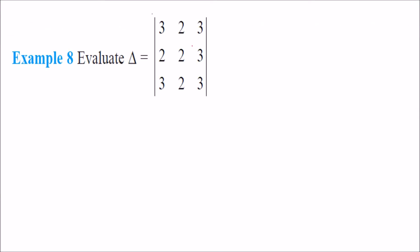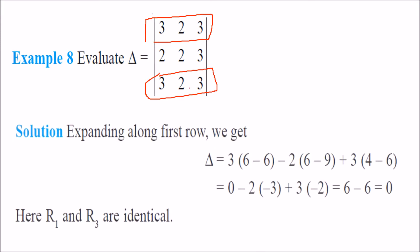We have to evaluate this determinant. As we see here, the first row and the third row are exactly the same. When we expand it using any row, you will get 0 only, because R1 and R3 are identical.